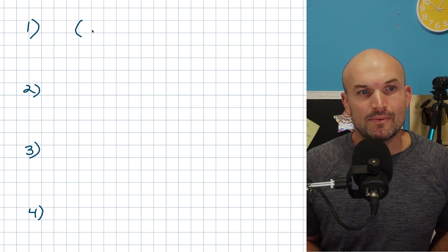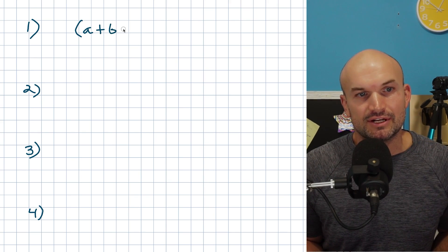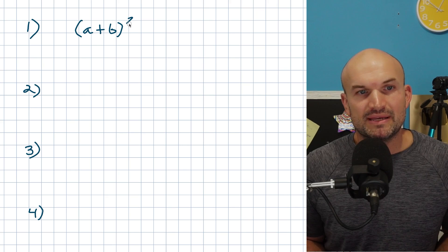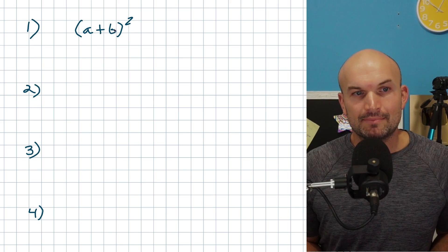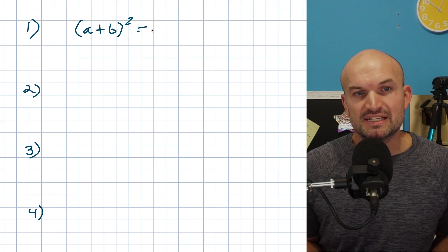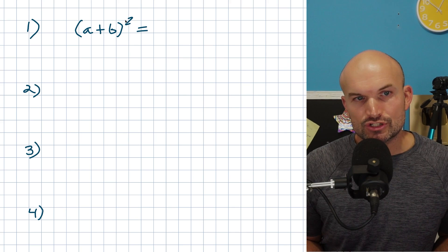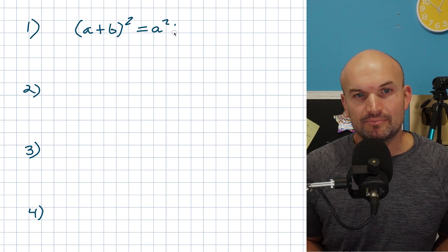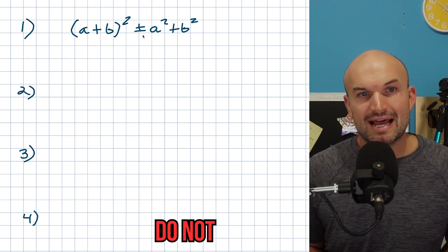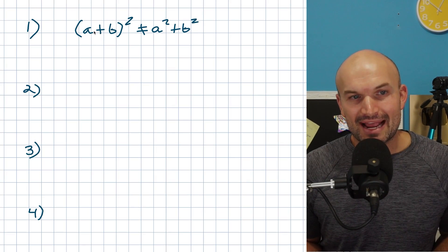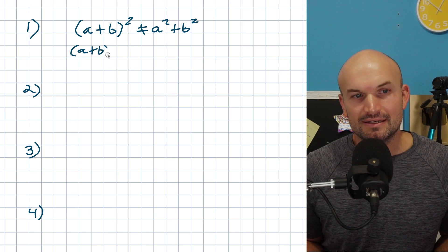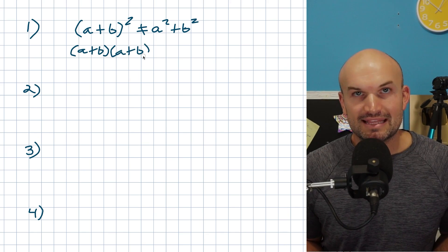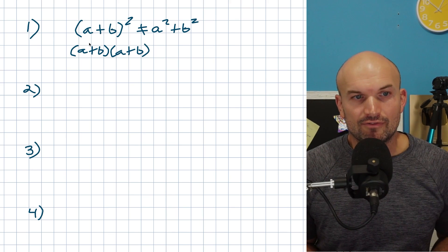So the first mistake that we're going to look at is when we have a quantity with two numbers separated by addition or subtraction being raised to a power. So in this example, we have (a+b)². Now, one of the biggest mistakes that students will make is they will distribute this 2 to the a and to the b. So therefore they'll get a² + b². Do not do that. Remember (a+b)² - what this means is (a+b) times (a+b). And what that means is we need to now go ahead and apply our foil.